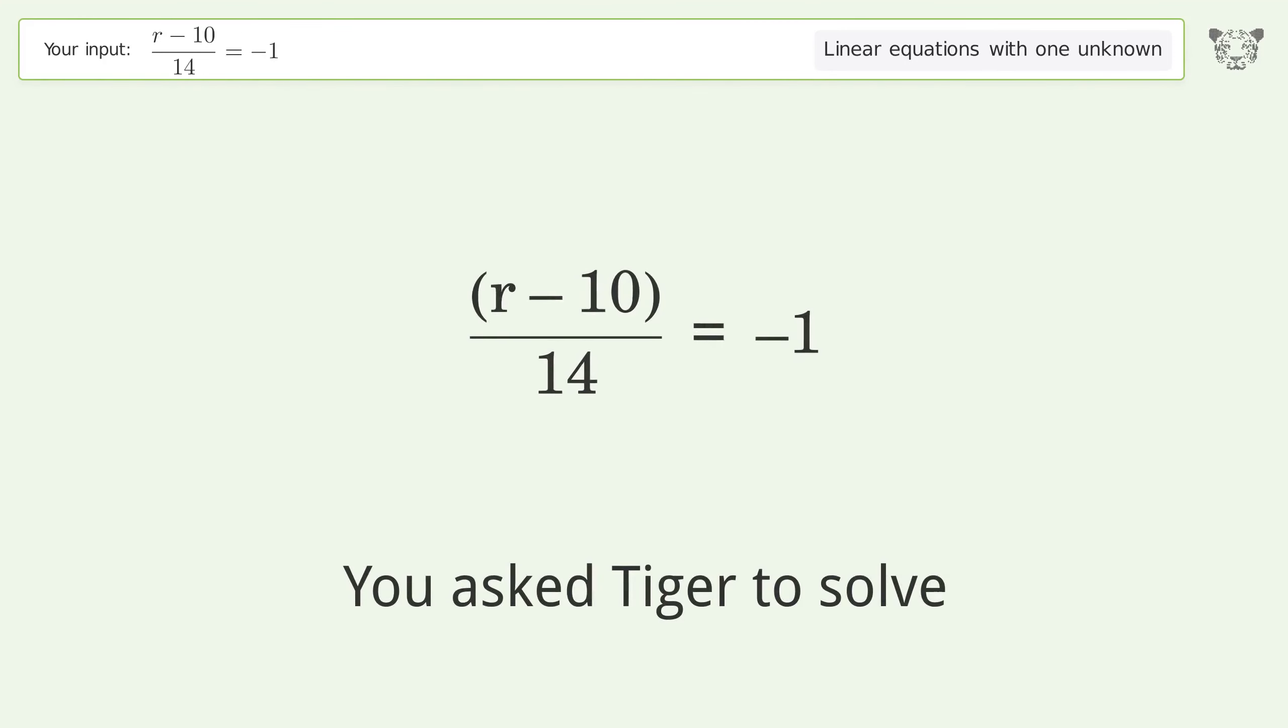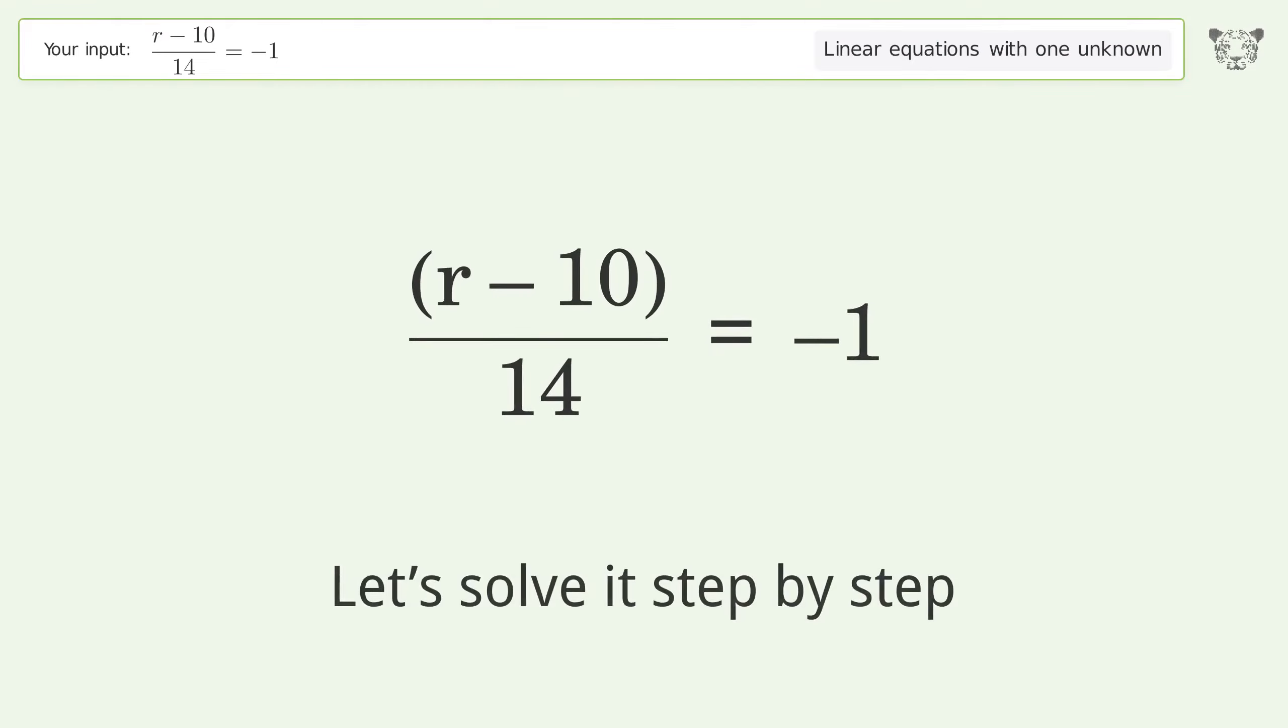You asked Tiger to solve this linear equation with one unknown. The final result is r equals negative four. Let's solve it step by step. Simplify the expression.